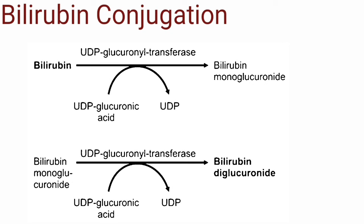Conjugation of bilirubin in hepatocytes. Inside the hepatocyte, two molecules of glucuronic acid are attached to bilirubin to form bilirubin diglucuronide, also called conjugated bilirubin or direct bilirubin. UDP-glucuronic acid serves as the activated donor of glucuronic acid. Bilirubin first reacts with one molecule of UDP-glucuronic acid to form bilirubin monoglucuronide plus UDP, catalyzed by UDP-glucuronosyltransferase. The same enzyme then catalyzes the conversion of bilirubin monoglucuronide to bilirubin diglucuronide by reacting with one more molecule of UDP-glucuronic acid.